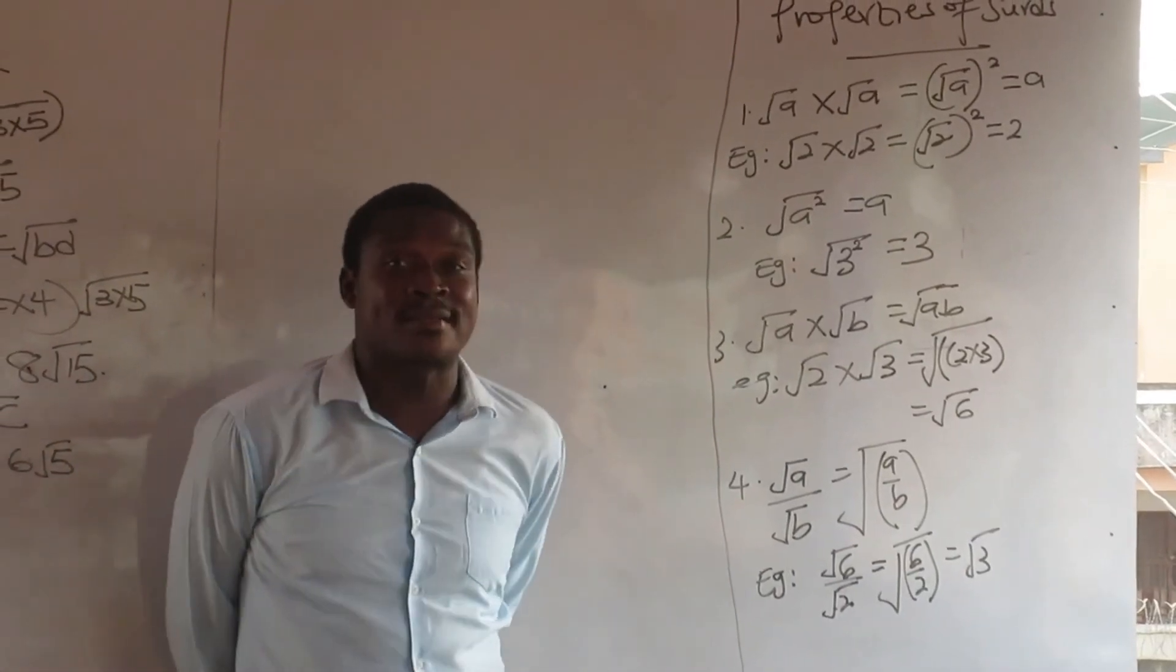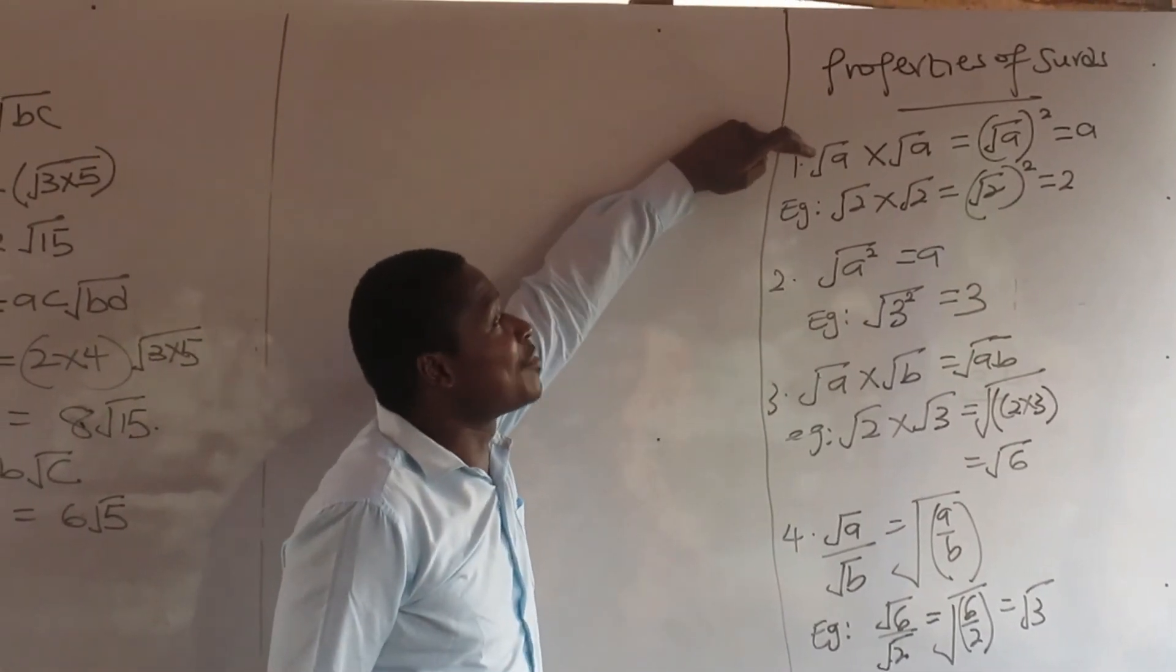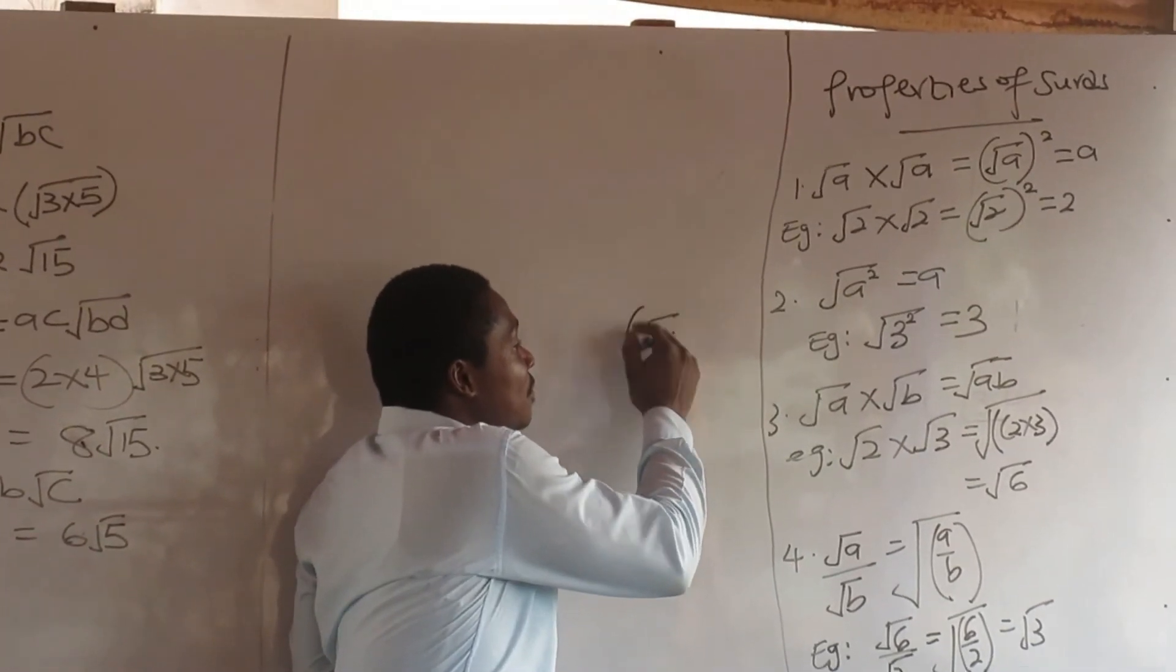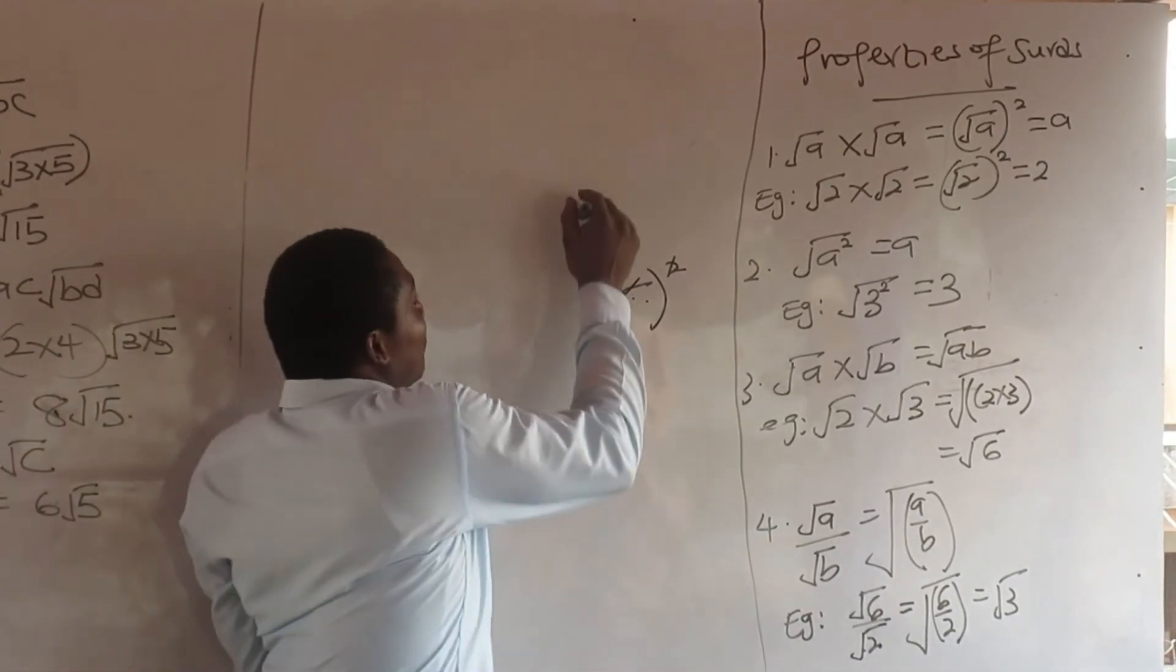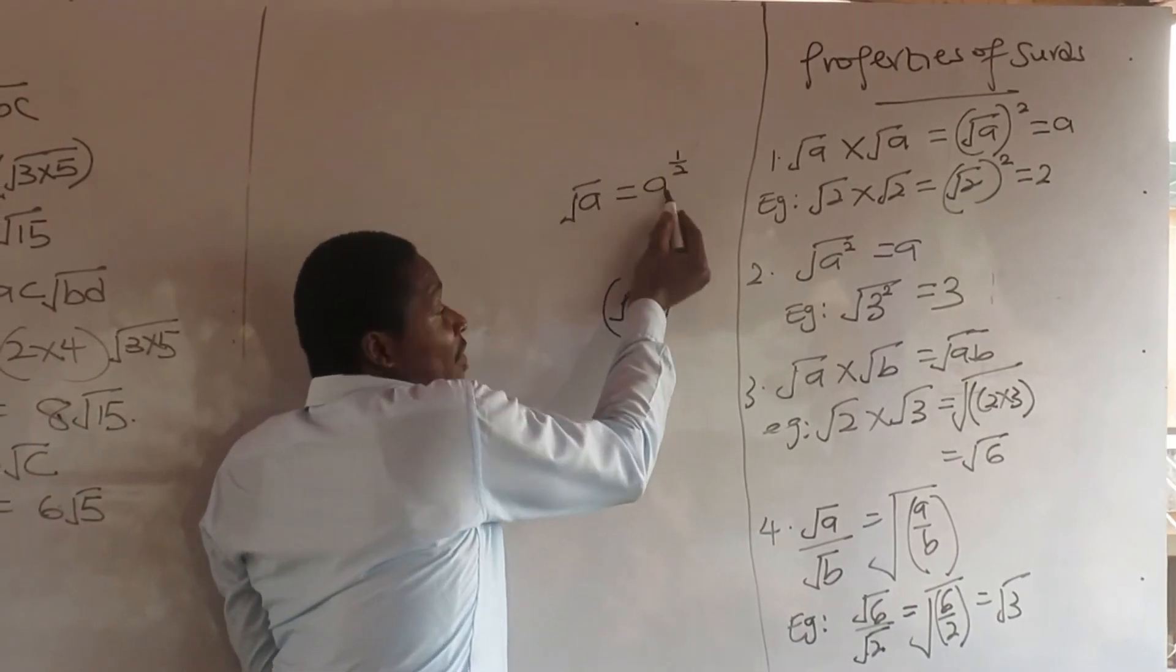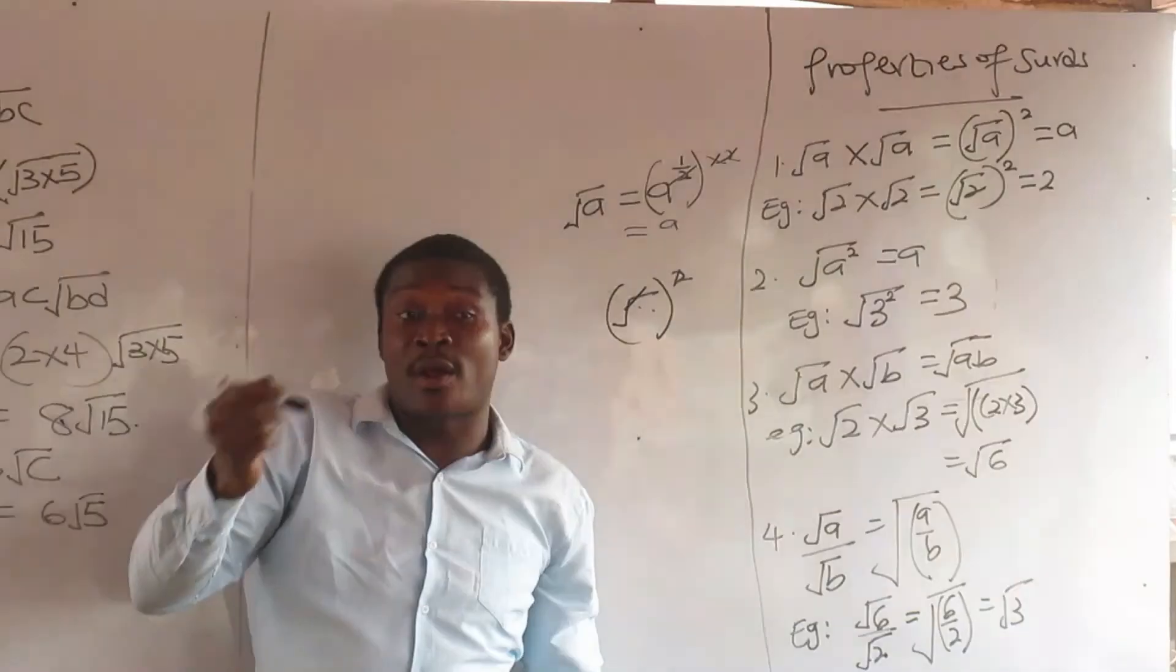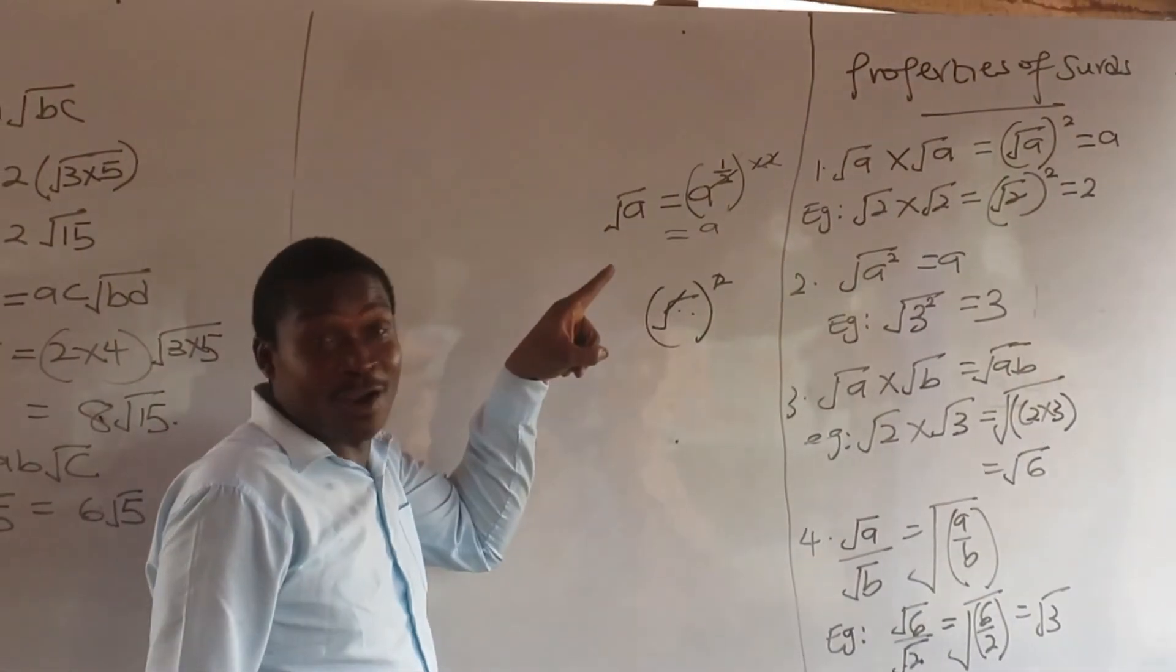So properties of surds. Root a times root a will give you root a squared, that will give you single a. Meaning, when you square a square root, the square root disappears. In which sense? Let's go. If there is root a, in indices, when you move this root you can have this, and when you happen to square this, you see, you can try it on the calculator and see. When you square a square root, the square root disappears. When you cube a cube root, the cube root disappears. So those things are from surds.